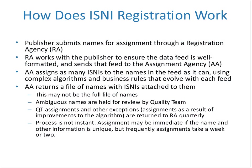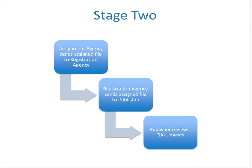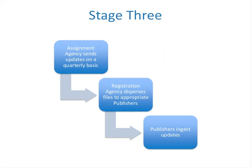The assignment agency then returns a file of names with ISNIs attached to them, though this may not be the full file. Ambiguous names are held for review by the quality team, so they are manually reviewed and researched. Quality team assignments and other exceptions are returned to the registration agent quarterly. The process is not terribly transactional — it's not instant. Assignment may be immediate if the name and other information is unique, but frequently assignments can take a week or more.